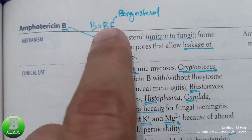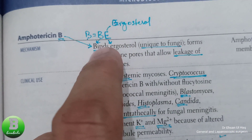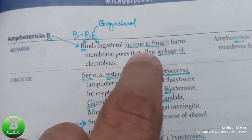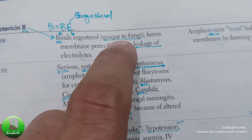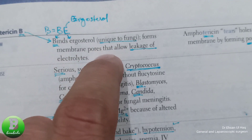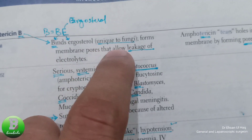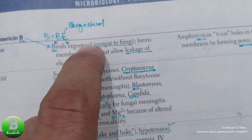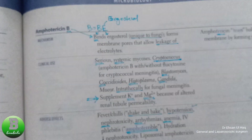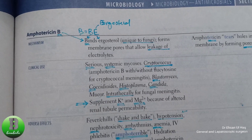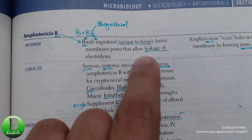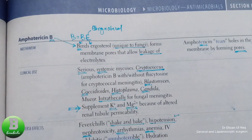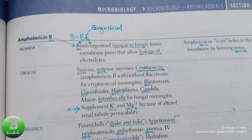Amphotericin B binds ergosterol, which is a compound unique to fungi. It forms membrane pores, causing electrolyte leakage. Amphotericin B essentially tears holes in the fungal membrane, and as a result the fungus dies.